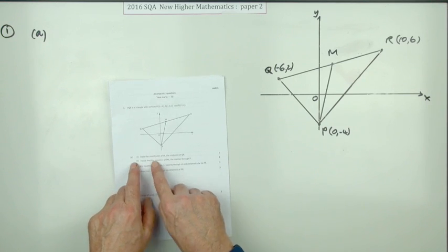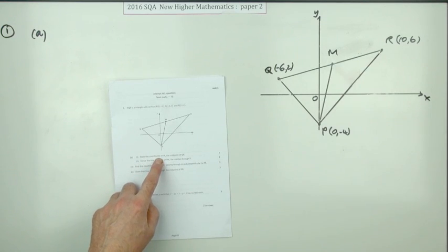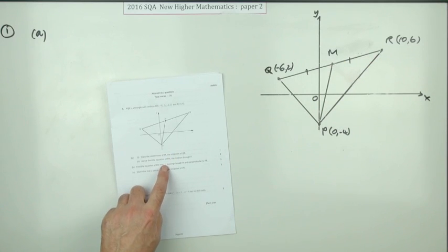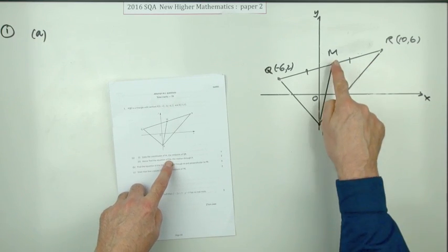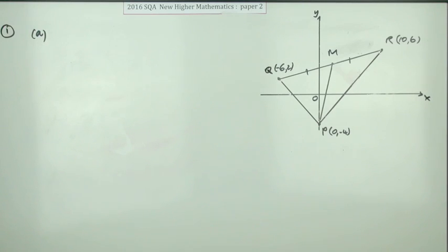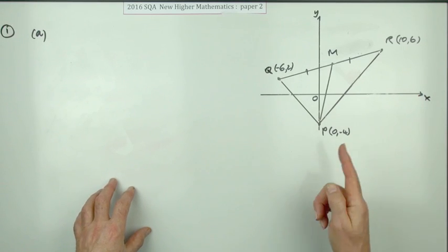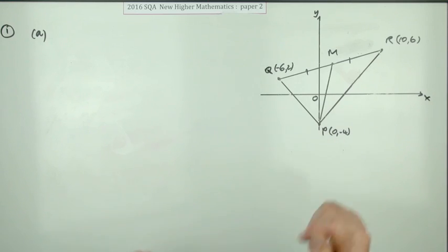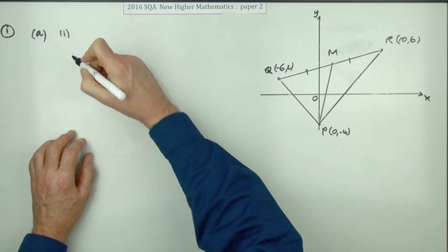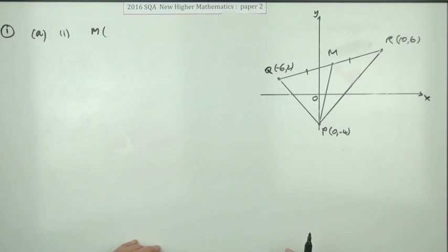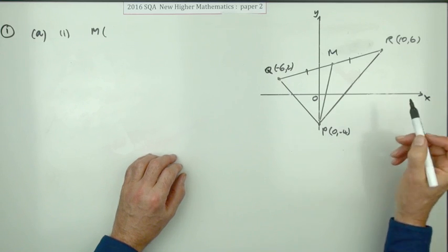So the first part is state the coordinates of M, which is the midpoint of QR, and hence find the equation of PM, the median through P, for three marks. Now that seems to be guiding you into it so that you don't make a mistake because it could just have said find the equation of the median from P, and you'd have had to know you're meant to go to the midpoint of the opposite side. So the first part was just state, so in other words you can just write this down and that would be it for the one mark. And of course you could, because you could just say, well, the Y coordinates are obvious.